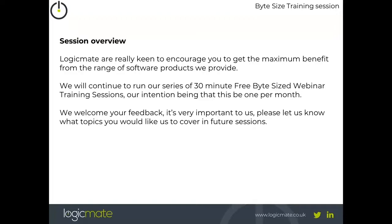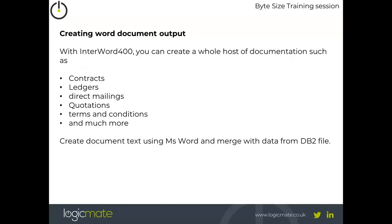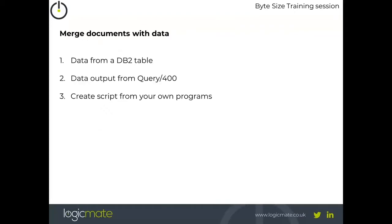So, word processing documents — why would we use them? Within the InterForm product we can create documents like invoices and so on for taking small file information, but this gives us the ability to create a word document — a letter, a contract, a ledger, quotation, terms and conditions, and many other types of documents. You can specify within a word document the text that appears on the output and also merge that with data from the system. All the word wrapping and word processing is done within the product, giving you a much nicer flowing document than you'd get from a traditional fixed-space spool file.